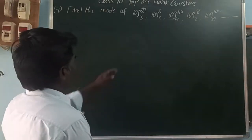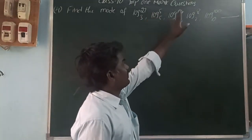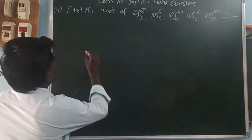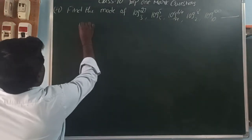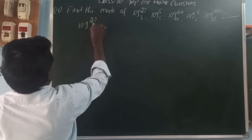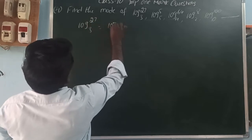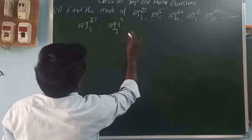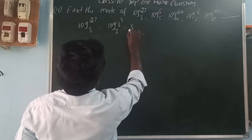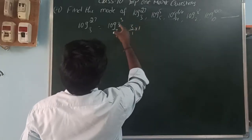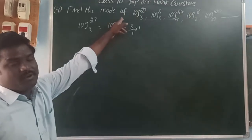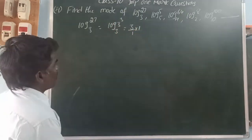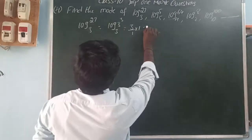Find the mode of: log 27 base 3, log 5 base 5, log 64 base 4, log 8 base 2, log 100 base 10. For log 27 base 3: write 27 as 3 cubed, so using the formula log(x^m) base (x^n) equals m/n, the value is 3. For log 5 base 5: any log where number and base are the same equals 1.